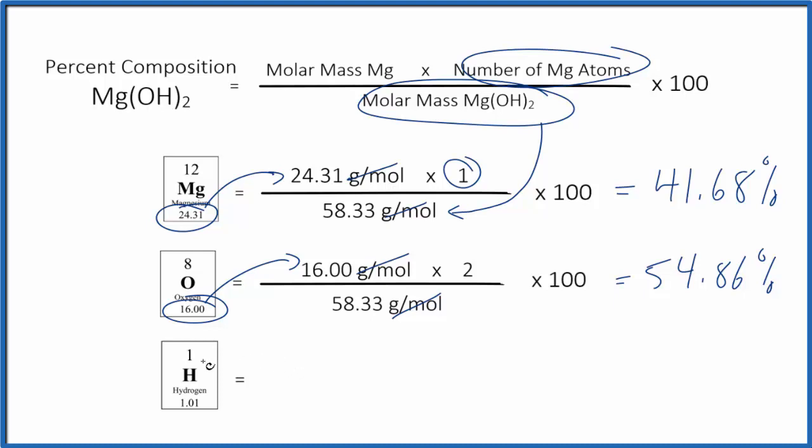So pause and find the percent composition by mass for the hydrogen here in magnesium hydroxide.